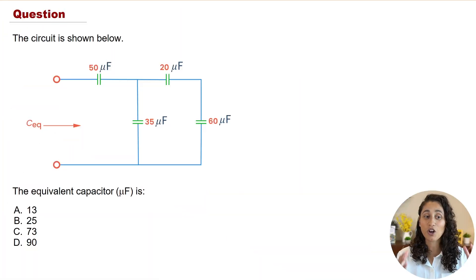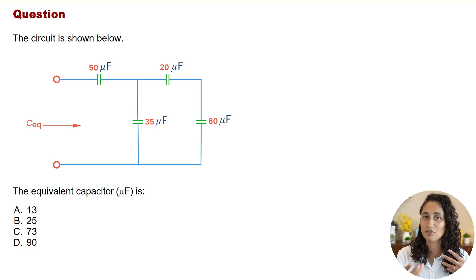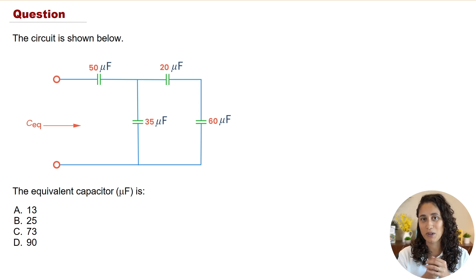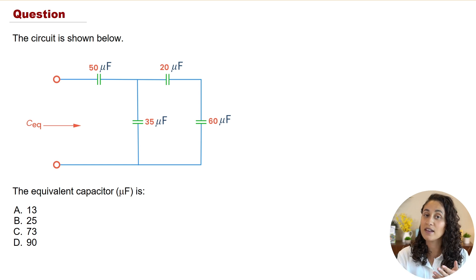Here we are given a circuit and we want to determine the equivalent capacitor. This is similar to the previous example we did where we had to determine the equivalent resistance — the only difference is that here we have capacitors. You'll need to go to the reference manual and grab the equations for capacitors in series and in parallel, and apply those to determine the equivalent capacitor. Go ahead and pause this video and give it a try before checking the solution.